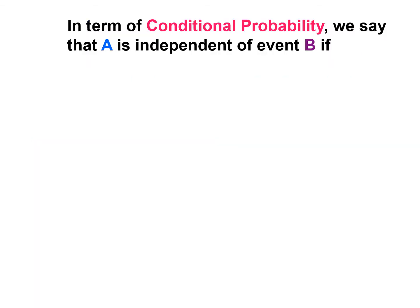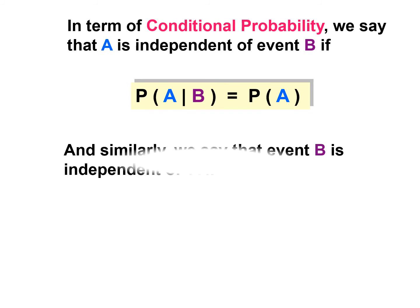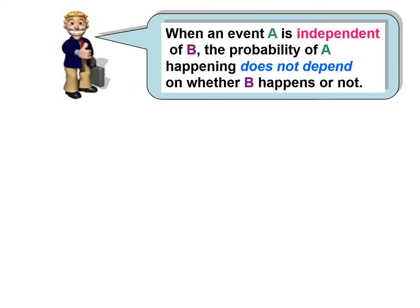In terms of conditional probability, we say that A is independent of event B if P(A|B) equals P(A), meaning A is not dependent on B. Similarly, we say that event B is independent of A if P(B|A) equals P(B). When an event A is independent of B, the probability of A happening does not depend on whether B happens or not.